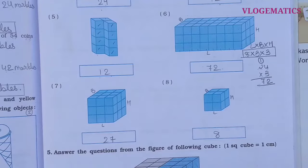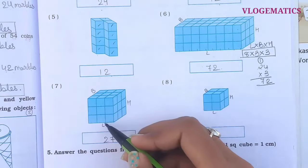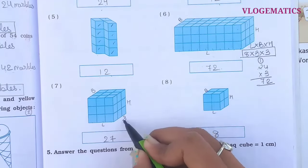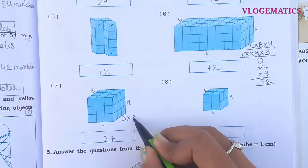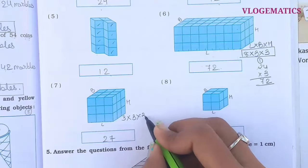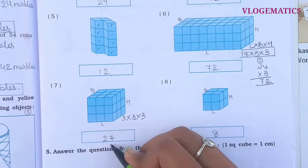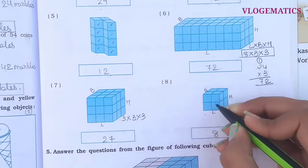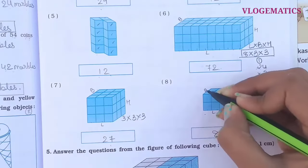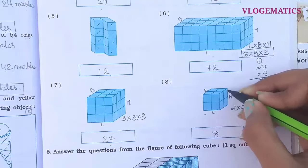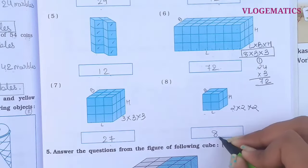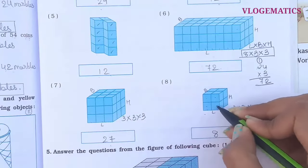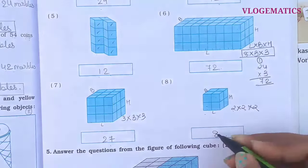For shape 7, we have a cube, so we apply the same formula: length × breadth × height. Length, breadth, and height are all 3 cm. So 3 × 3 = 9, and 9 × 3 = 27 — here we have 27 cm cubes. For shape 8, again a cube: length, breadth, and height are all 2 cm. So 2 × 2 = 4, and 4 × 2 = 8 — here we have 8 cm cubes. We can count: 1, 2, 3, 4 in front and 4 at the back — 4 plus 4 is 8.